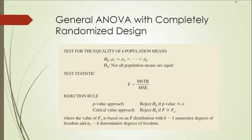Once we have the F-test statistic, it is easy to draw the conclusion. We can either use the p-value approach or the critical value approach. This F-test is going to be an upper-tailed test. When the null hypothesis is true, mean square due to treatment will be relatively small, while mean squared error within treatment will be relatively large. As a result, the F-value will be relatively small — that's why this is always going to be an upper-tailed test.